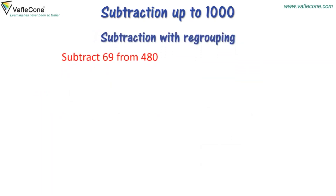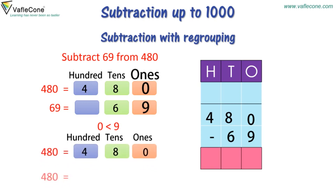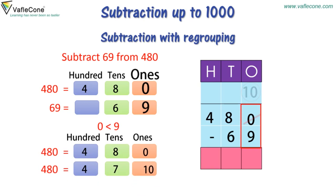Subtraction with regrouping. Arrange the minuend and subtrahend as per their place value. We see that the 1's place of the minuend, that is 0 in 480, is smaller than the 1's place of the subtrahend, that is 9 in 69. So we will regroup 480 as 400, 7 tens, and 10 ones. Now at the 1's place: 10-9 is equal to 1. At the 10's place: 7-6 is equal to 1. At the 100's place: 4-0 is equal to 4. So the answer is 411.